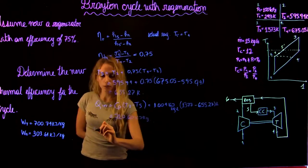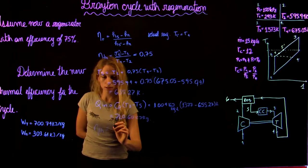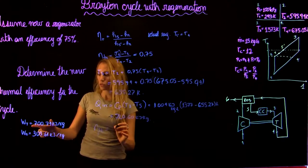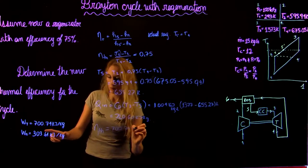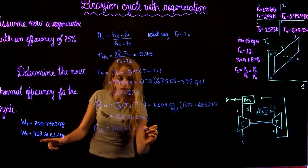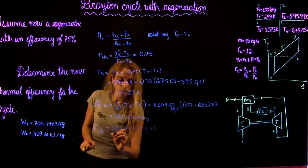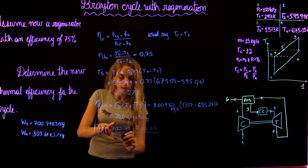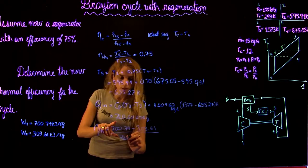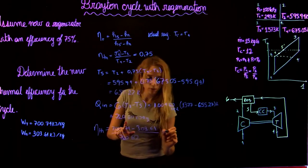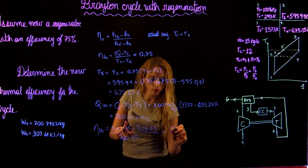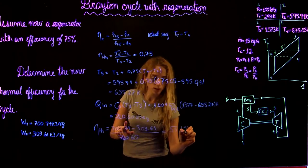If we plug it back into our equation for thermal efficiency, it's the work net—the work of the turbine minus the work of the compressor, which we found in the previous part—over the heat in. Assuming a 75% efficient heat exchanger, we find it's equal to 55.1%.